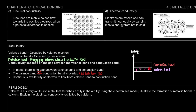When there is no band gap, it means that electrons can move to the conduction band. Once the electrons are in the conduction band and are mobile, they can flow — which means we can conduct electricity. So: valence band and conduction band overlap in metal, the electrons become mobile, and electricity can be conducted.